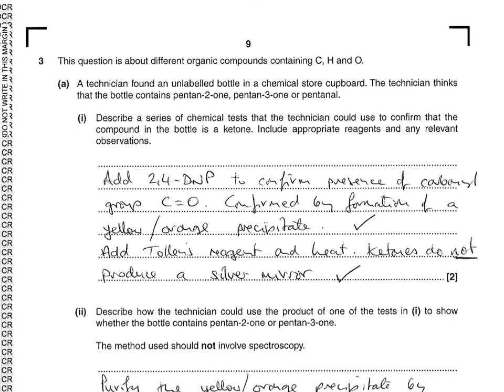The first thing you would need to do is confirm the presence of the carbonyl group, and that would be done by adding 2,4-DNP. If there's a carbonyl present, you would get a yellow-orange precipitate. Basically, that would be telling you this is either an aldehyde or a ketone.